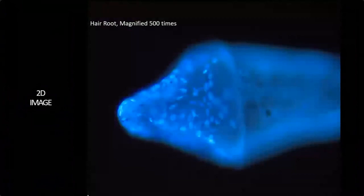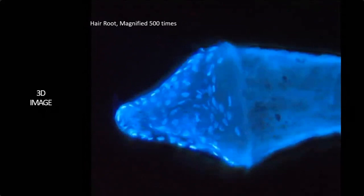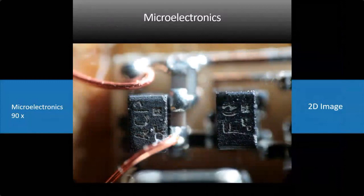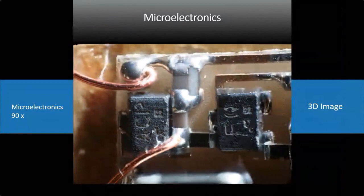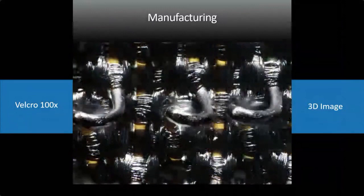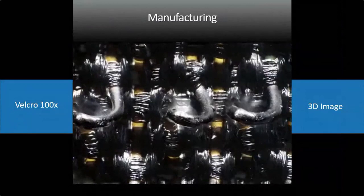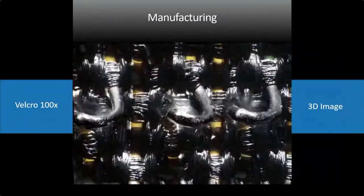Here's a hair root stained with DAPI, which stains for DNA — those are the blue cells in the root. Now in 3D, after taking the stack, you see the whole root and what it really looks like with all the cells and the shape of it. Here's a microelectronics example where the 2D image shows only one focal plane, but in 3D you really see everything in one shot. And in manufacturing, here's Velcro — almost a millimeter thick — showing the entire structure in 3D, with the plastic hooks and loops that interlock and pull apart.